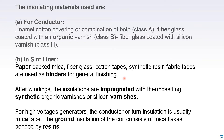The purpose of every insulation layer is to separate conducting paths — otherwise there will be fault or short circuit. Insulation ensures conducting paths do not come in contact with other conducting paths. After winding, the windings are impregnated with thermosetting synthetic organic varnish or silicone varnish. For high voltage generators, the conductor or turn insulation is usually mica tape. The ground insulation of the coil consists of mica flex bonded by resins.